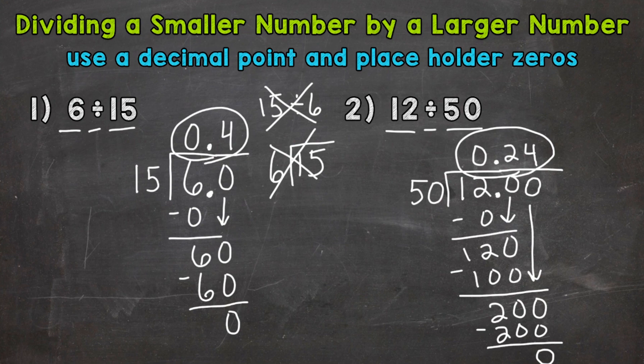So our final answer is 24 hundredths. Our answer was less than one whole, because we took 12 holes and split that 12 into 50 equal groups. So those groups, each of those groups were less than a whole. And exactly, they were 24 hundredths.